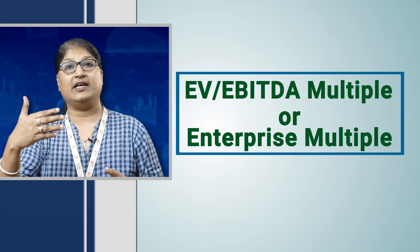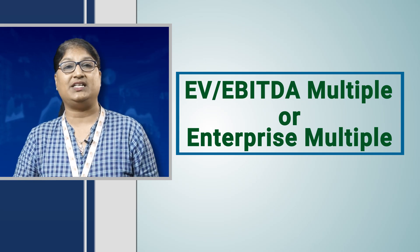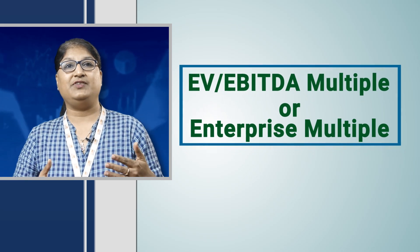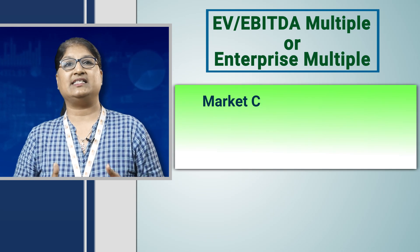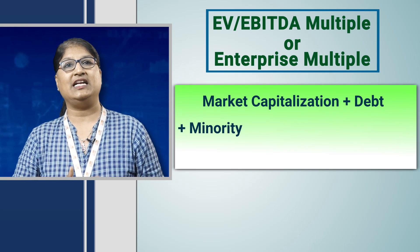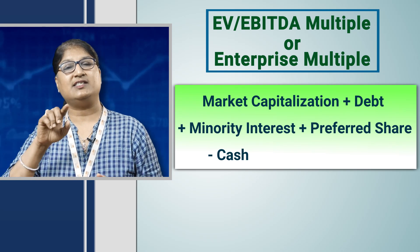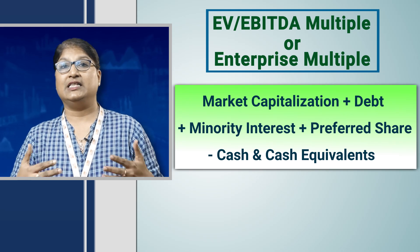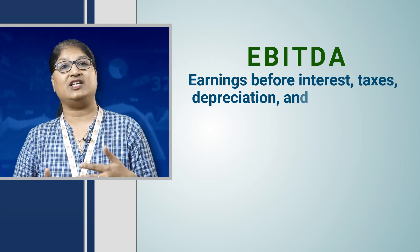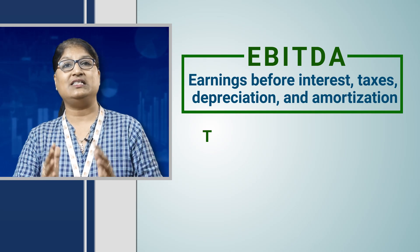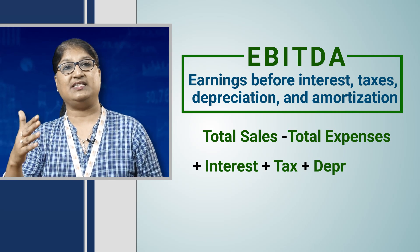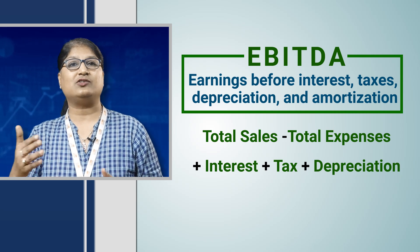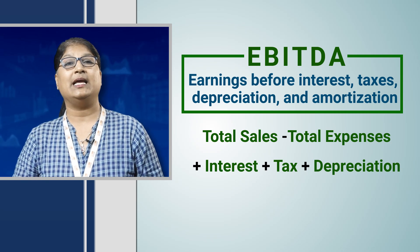So what is the formula for enterprise multiple? We calculate EV to EBITDA where EV equals market capitalization plus debt plus minority interest plus preferred shares, minus total cash and cash equivalents — all of which can be found in the balance sheet. EBITDA means earnings before interest, taxes, depreciation, and amortization, calculated by taking total sales, subtracting total expenses, and then adding back interest, tax, and depreciation. These figures can be found in the profit and loss statement.